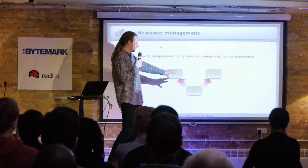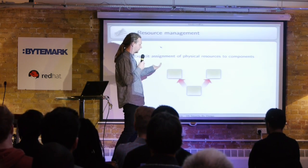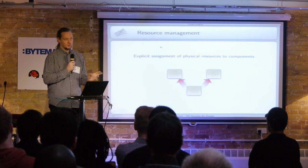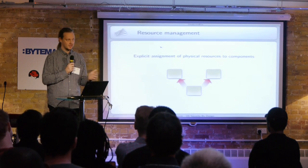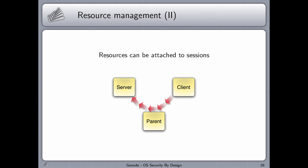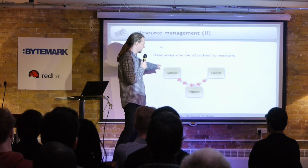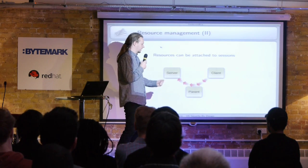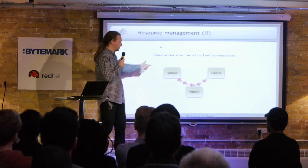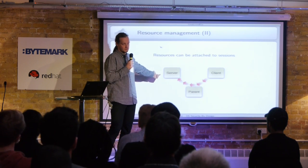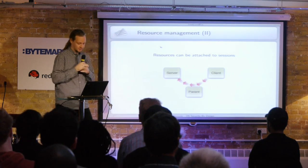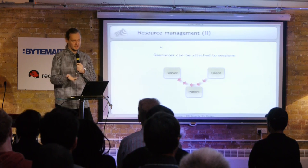Parents must assign physical resources to child processes, but in some cases this is too rigid — for servers where you don't know in advance how many resources they'll need, depending on client behavior. The idea is that a client can attach a budget of its own resources to a session request and essentially pay the server for a service. This creates a kind of economic system for dealing with resources, which basically removes the denial-of-service problem.